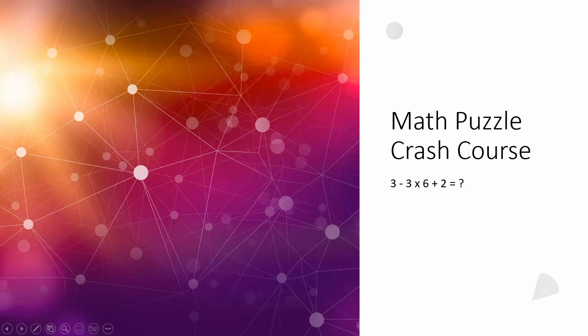Hello everyone and welcome back to the math puzzle crash course. We have a problem here: 3 minus 3 times 6 plus 2 equals... I've done a video on this back in July of 2023 and want to review it again. I'm seeing lots of mistakes online and in forums where people are answering 2 or 17, and in some cases even minus 17.